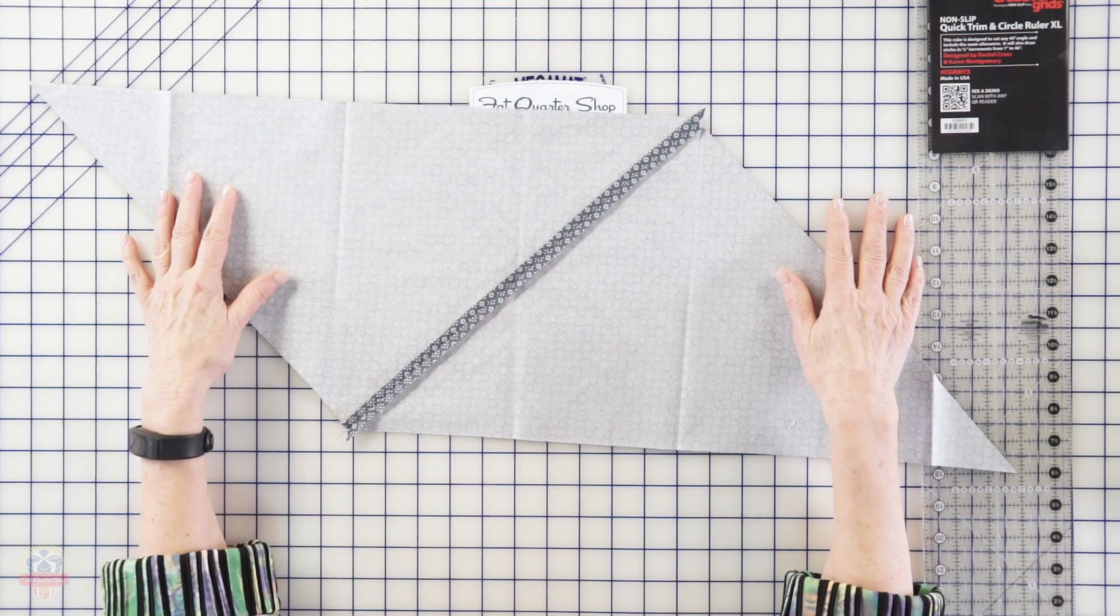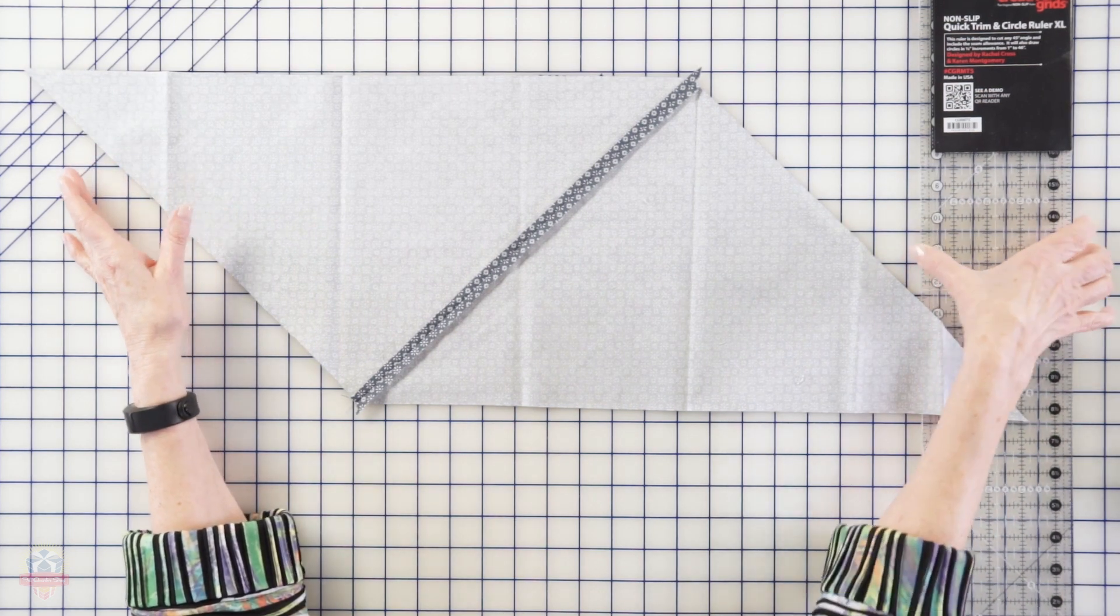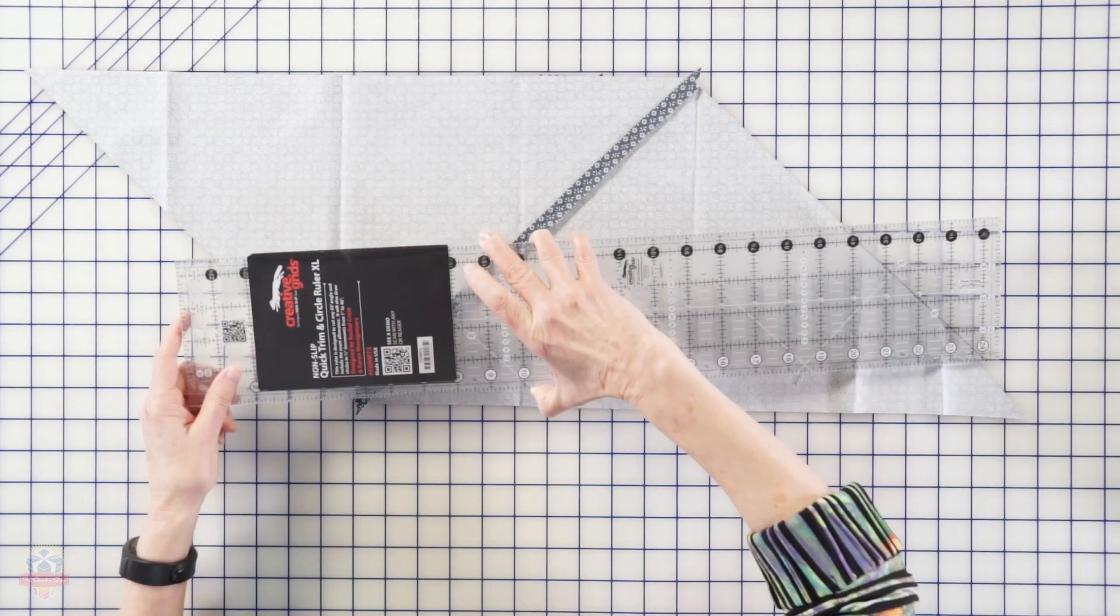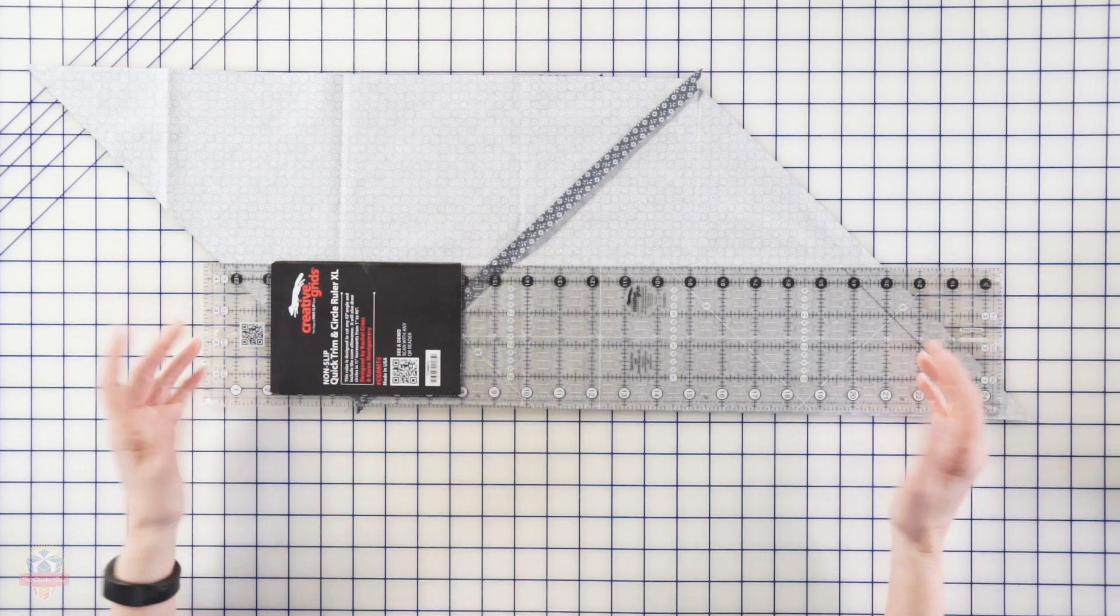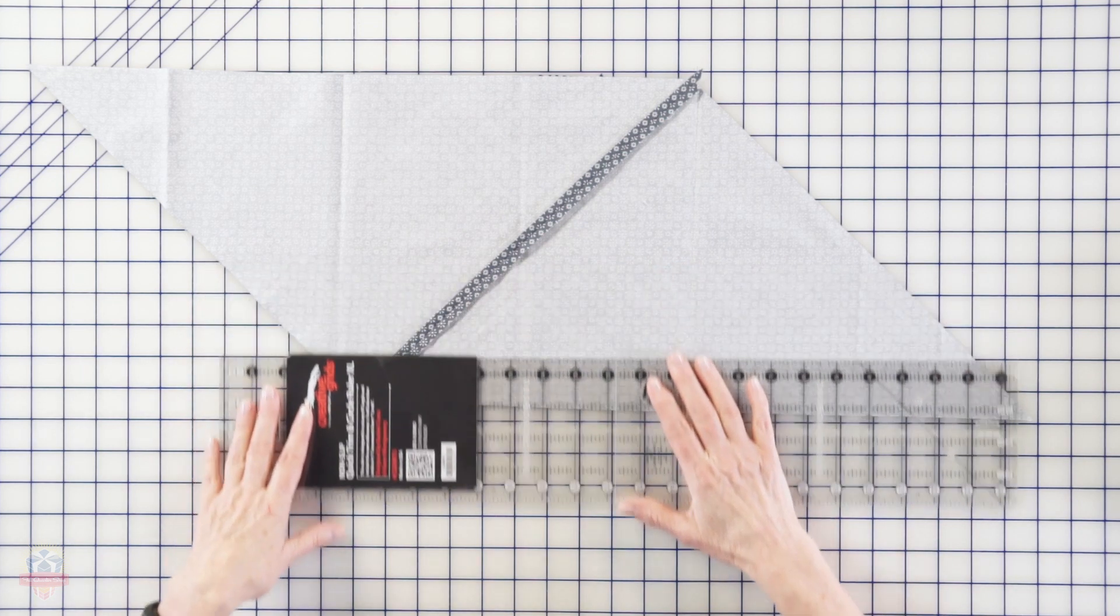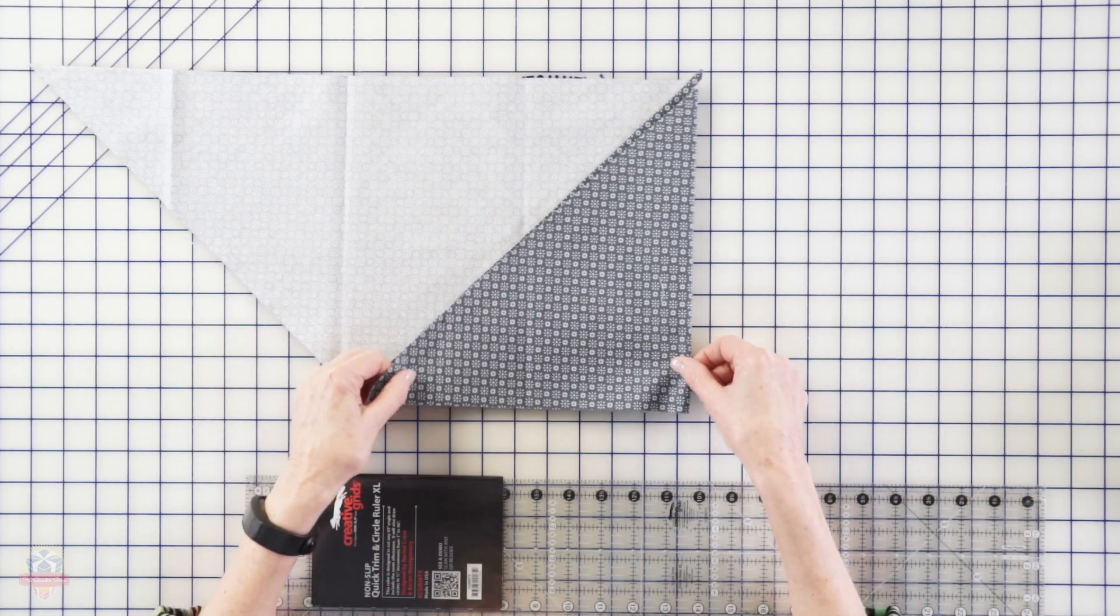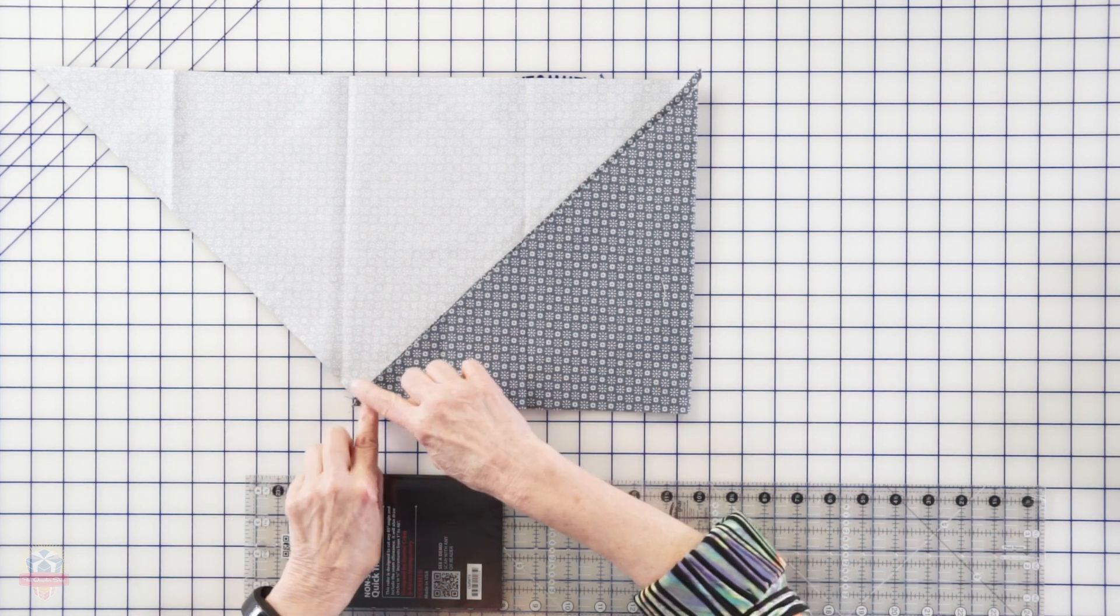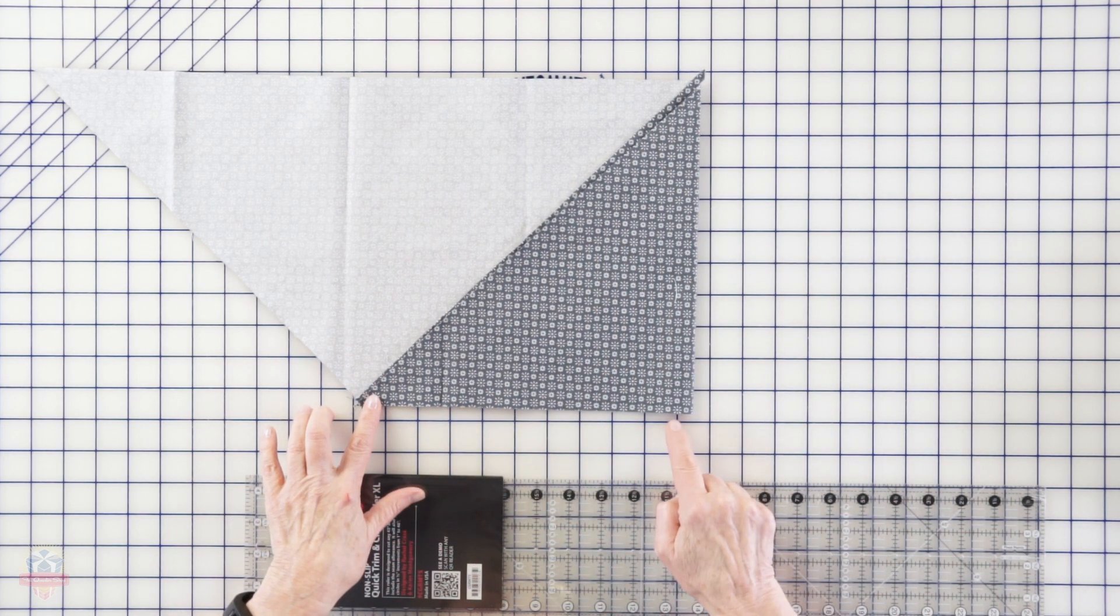Now this isn't too terribly big of a piece - we could easily lay our ruler on here and cut our strips - but sometimes you're using a much bigger piece and so here's a little trick that I can share with you. If you take your sides and fold them over so that you've got this going right along your seam and you've got a nice straight line down at the bottom,